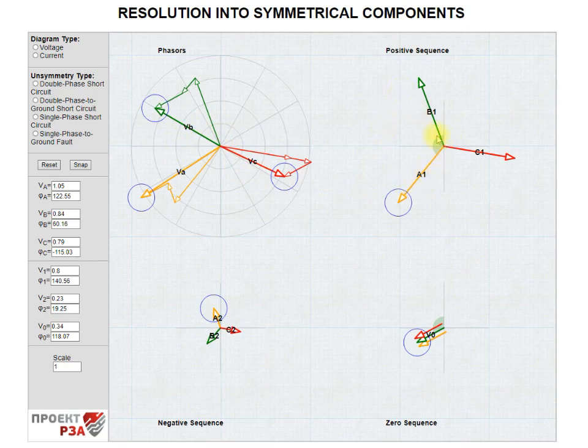Let's discuss each of them in more detail. This one is the positive sequence system. Here it is. The sequence of the phases here is ABC. That's where the name comes from.